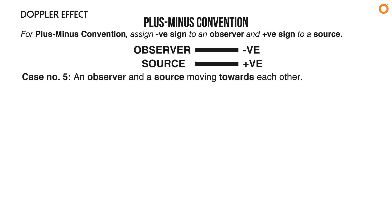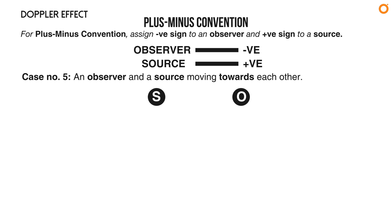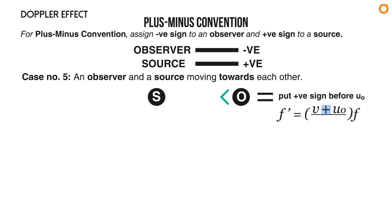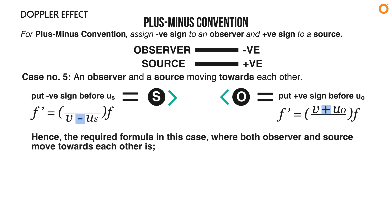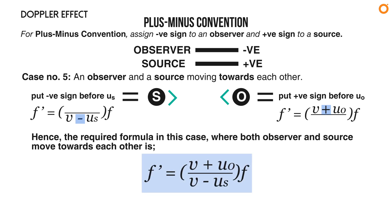Case number five: an observer and a source moving towards each other. Both move in opposite directions but towards each other. The observer moves towards the source, so put a positive sign before u₀. The source moves towards the observer, so put a negative sign before uₛ. The required formula is: f prime equals to (v plus u₀) divided by (v minus uₛ) times f.